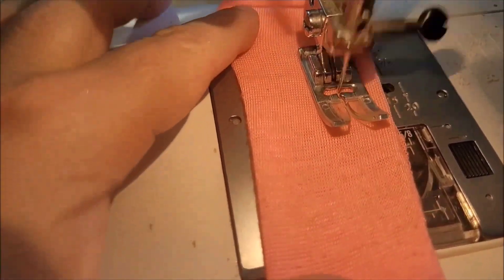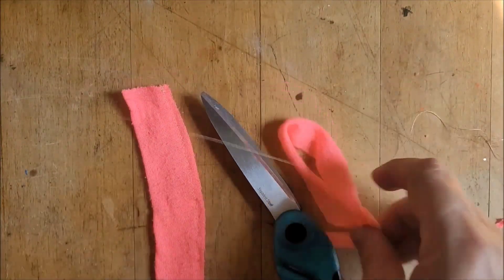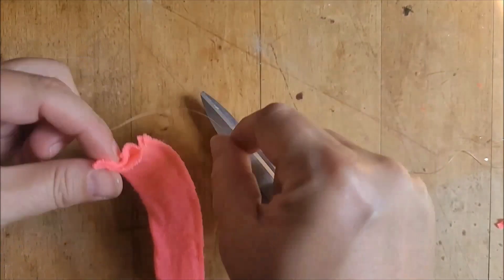Fold your fabric in half lengthwise and sew down one side to make a sort of fabric tube. Trim off any excess fabric.